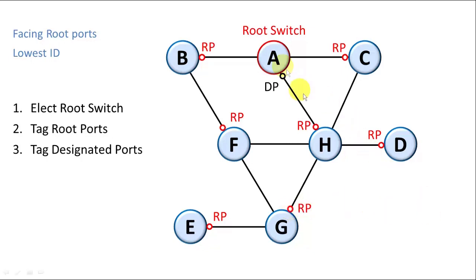For A, for instance, we have a connection between A and H. We labeled this the root port. So the other end of that connection is going to be labeled the designated port, which means it has to be open for H to reach the root. And we do exactly the same thing for all the other connections.